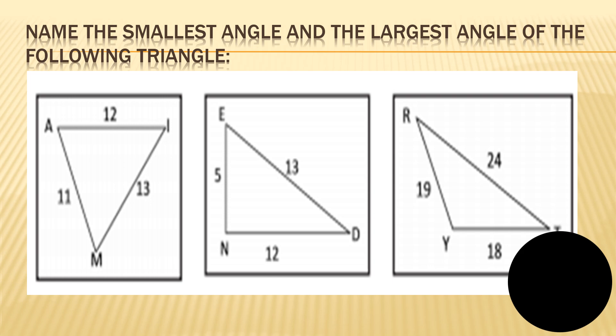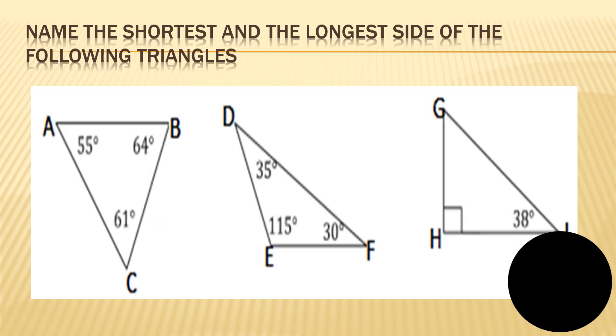Now, name the smallest angle and the largest angle of the following. Of course, by using it. So, the largest angle here is, or the smallest, the largest angle is angle A. And then, here is angle N and here the angle Y. So, let's move. The shortest and the longest side of the following. So, we have the shortest side is A, C and then here D, F and here G, A, I. And the shortest side. So, we have A, B, E, F and H, L, I, H, I.